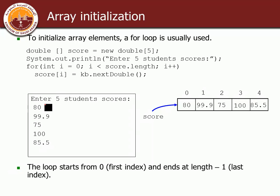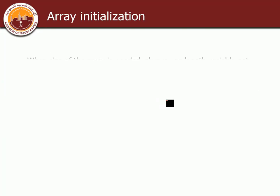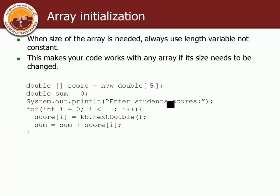When you enter numbers on the keyboard they appear on screen as you type them — that's why you see them. We haven't printed them explicitly; we're just saving them into the array. We start from zero and end at score.length minus one because we don't use the equal sign. Generally, with arrays you go one by one, incrementing by one.